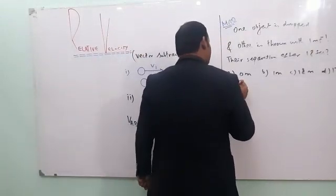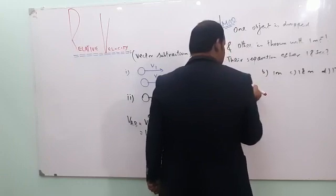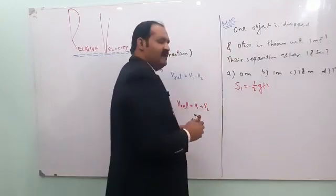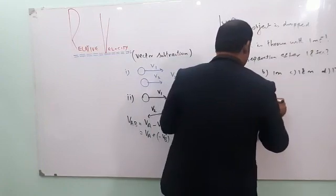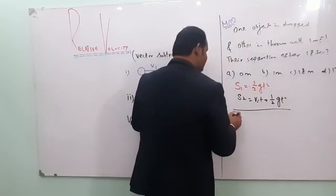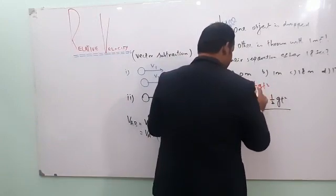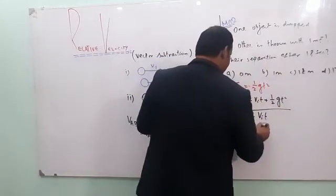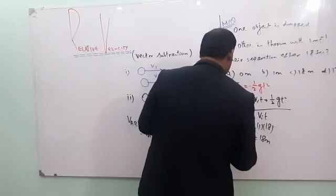For the dropped object, the displacement formula becomes s1 = half g t squared, since its initial velocity is zero. For the thrown object, the formula is s2 = v_i t plus half g t squared. To find the separation, I subtract: s2 minus s1 gives v_i times t. With v_i equal to 1 and t equal to 18 seconds, the separation comes out to be 18 meters.